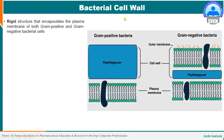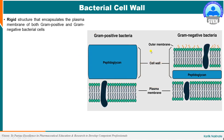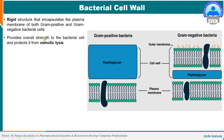The bacterial cell wall is a very rigid structure that encapsulates the plasma membrane of both gram positive and gram negative bacteria. This particular structure is absent in eukaryotes. Cell wall is a very important part of the bacterial cell. It helps in maintaining the shape of the cell, provides overall strength to the cell, and most importantly it protects the bacterial cell from osmotic rupture and lysis, particularly in case of a mismatch of solute concentration in the bacterial cell and in the extracellular medium.